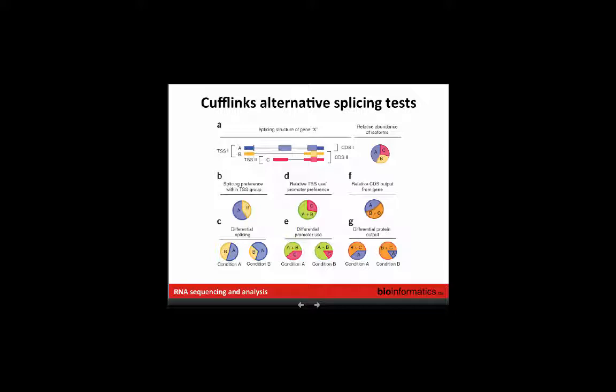What we'll discuss today is Cufflinks' attempt to address this problem. Cufflinks breaks the problem into three parts: transcription start sites, the CDS components (the part that's actually translated), and splicing preferences within transcripts. Looking at this hypothetical example with three transcripts — blue, yellow, and red — we have two transcripts sharing the same transcription start site where one skips an exon relative to the other, and another set differing by their transcription start site.